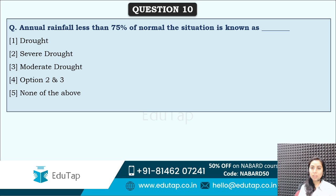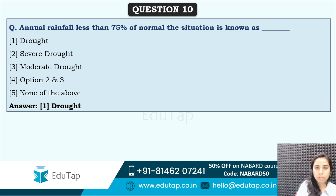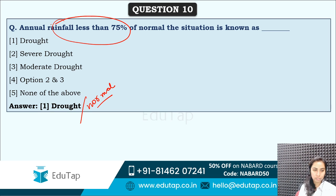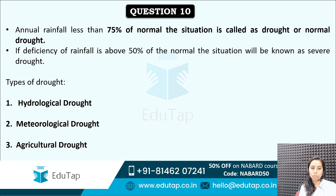Annual rainfall less than 75% of normal — the situation is known as what? Rainfall and rainy days are very important for NABARD. In phase one also, it was asked according to IMD what a rainy day is defined as. The options are: drought, severe drought, moderate drought, option 2 and 3 both, meaning moderate to severe drought, or none of the above. The correct answer is drought — also called normal drought. If deficiency of rainfall is above 50%, then it is called severe drought.